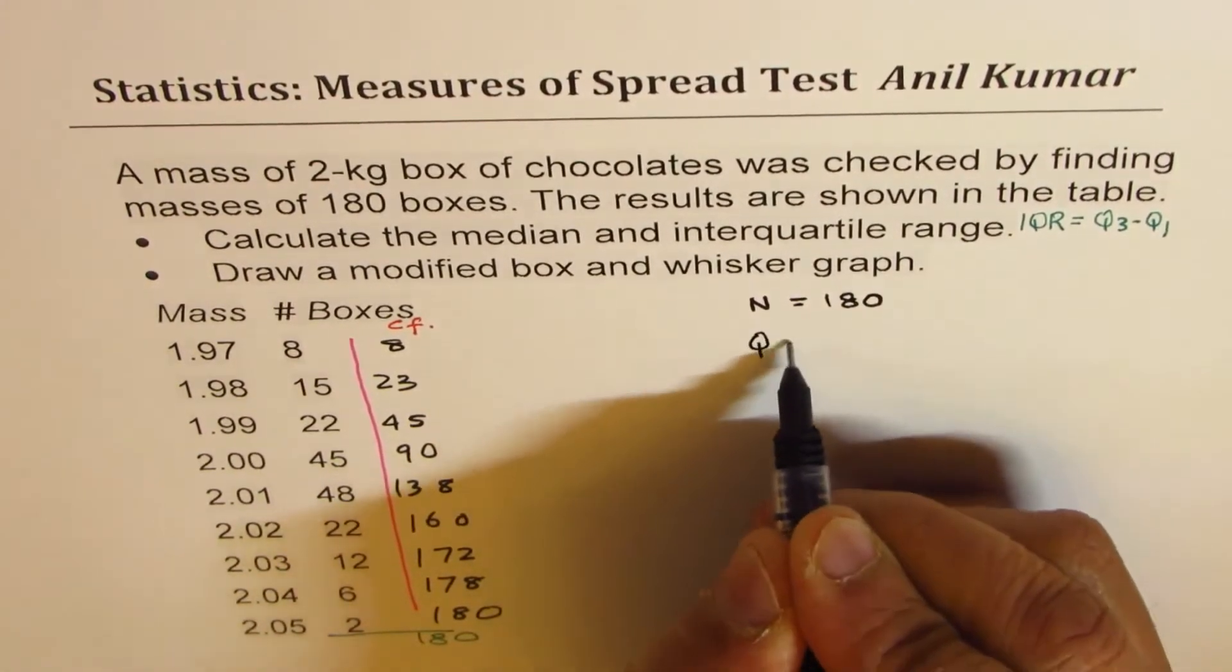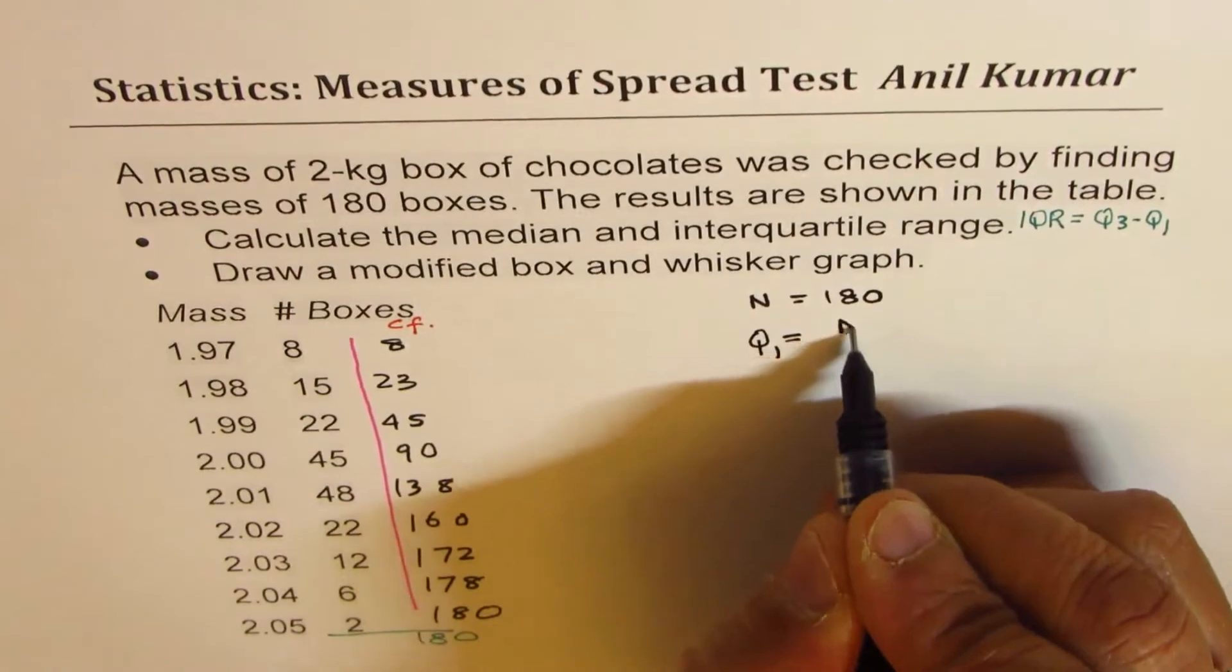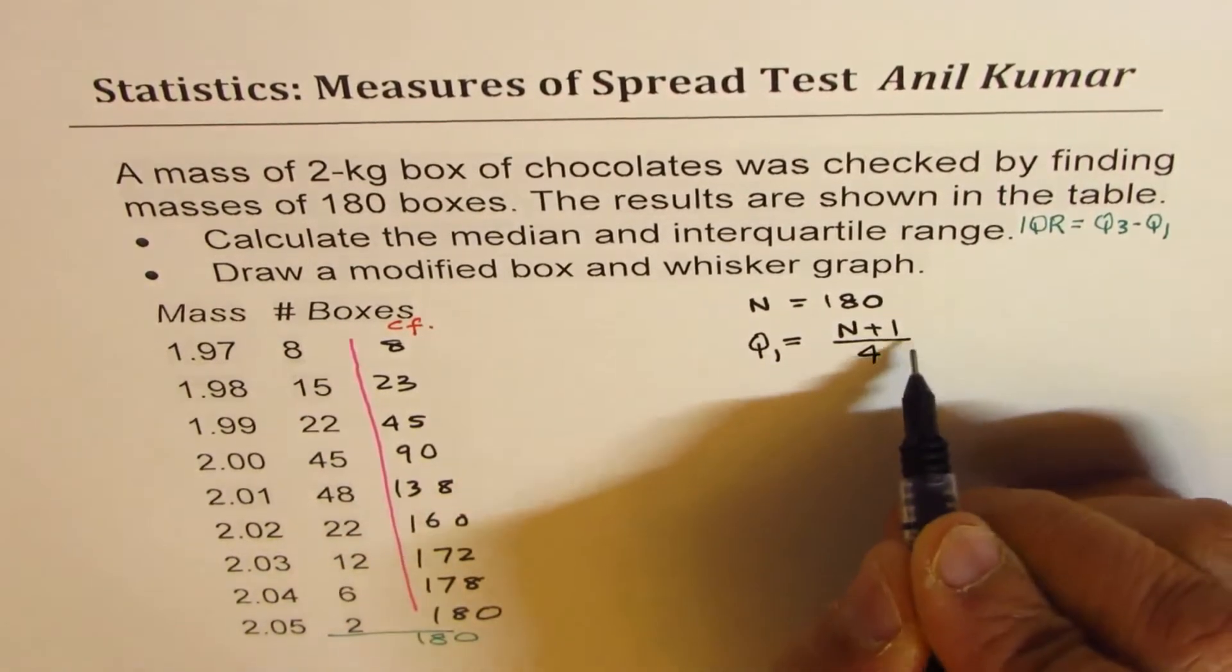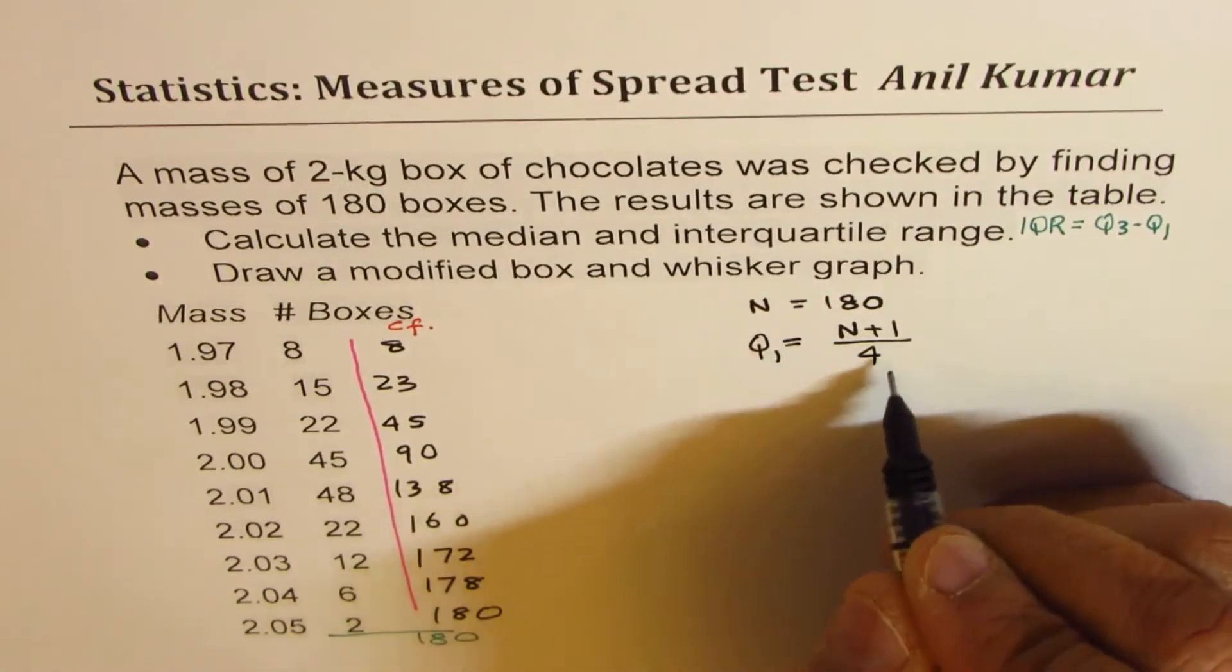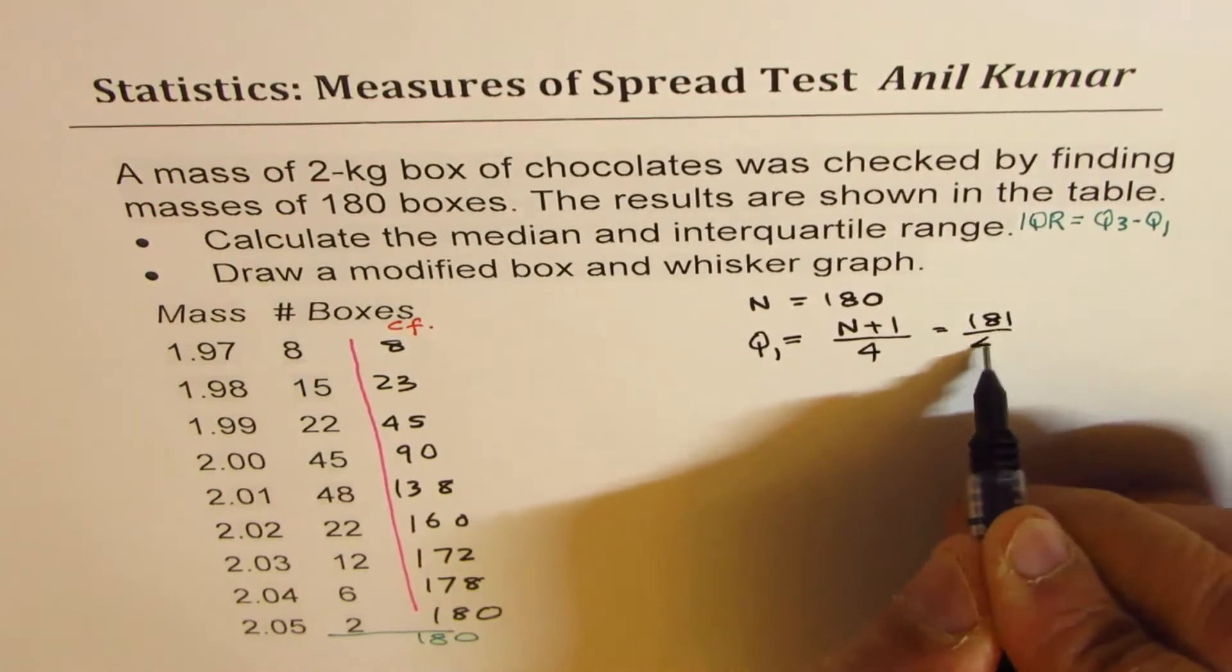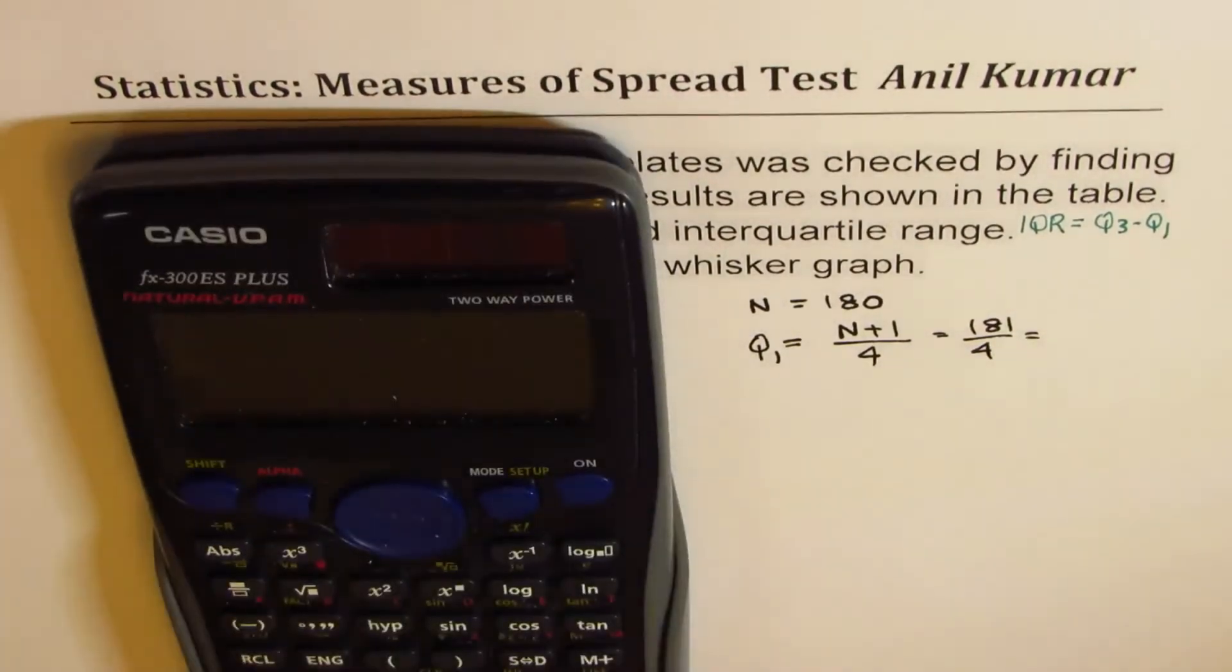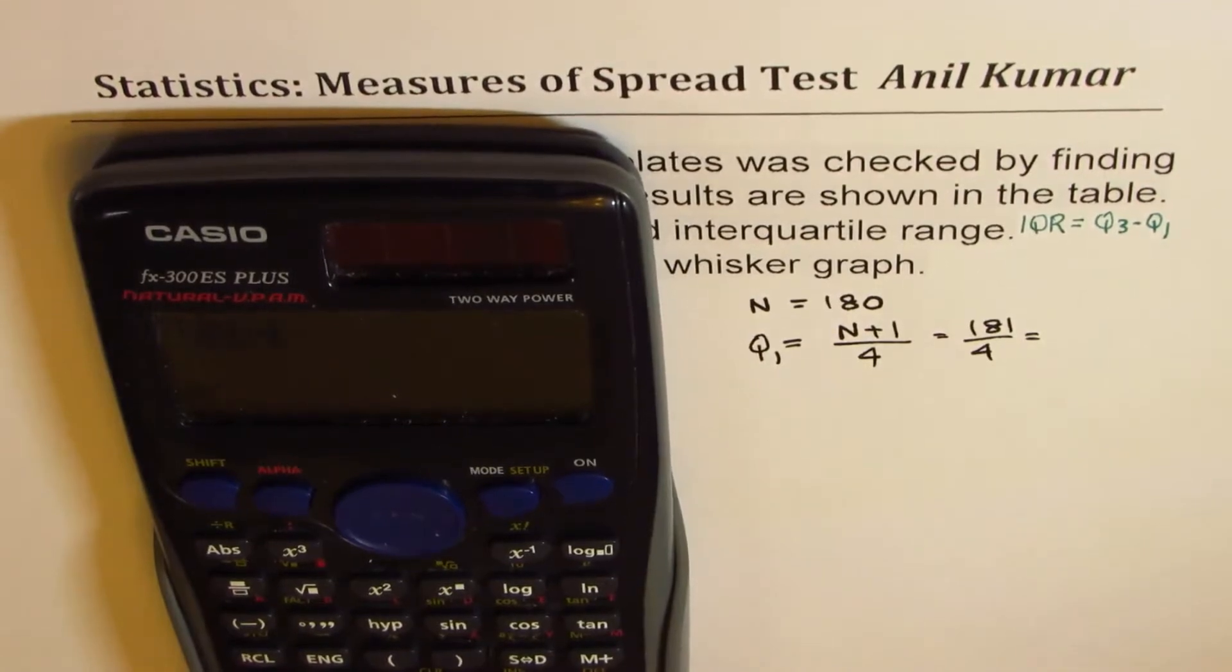To find Q1 we have to do n plus 1 divided by 4. First quartile, four equal parts. So it is 181 over 4. So we will do 181 divided by 4 equals, in decimal numbers, 45.25.